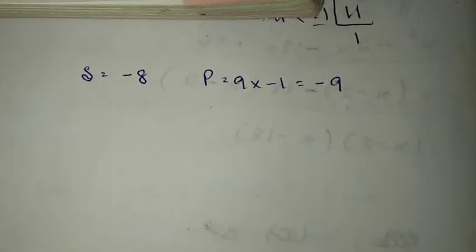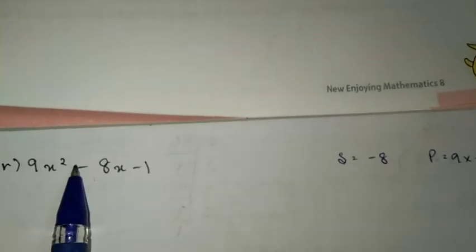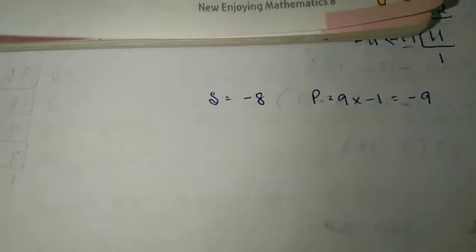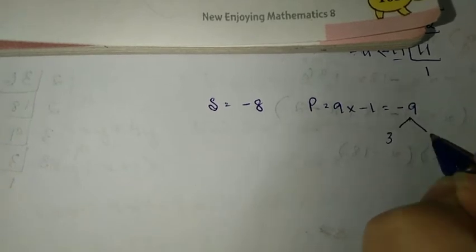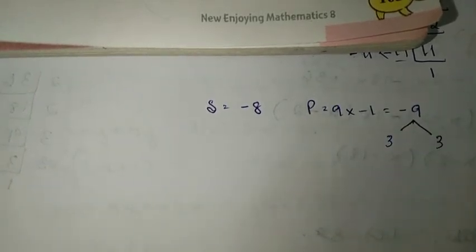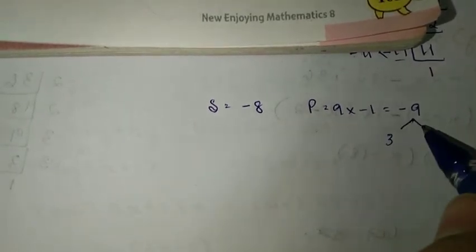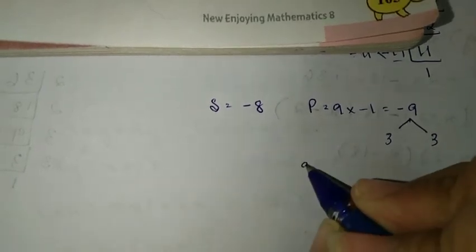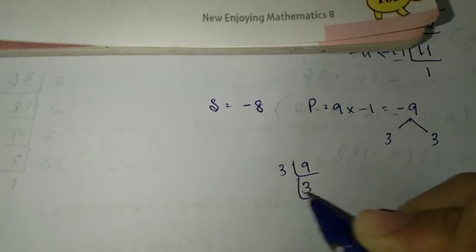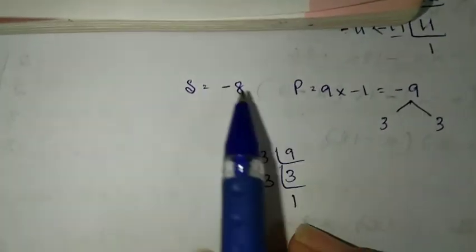9's prime factorization: we know that 9 is 3 times 3. What combination will give us the answer? 9 into 1, or 3 into 3.